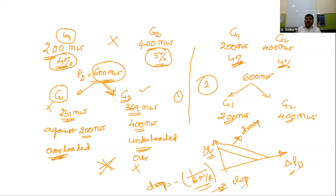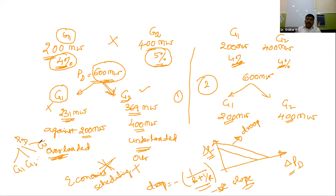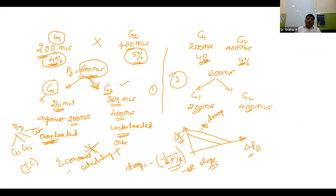In the first case, the 600 MW load was distributed as 231 MW and 369 MW based on frequency and droop — but no economics were considered. In Module 1, we used economic load scheduling, where the total load is distributed among generators G1 through Gn based on incremental cost curves.